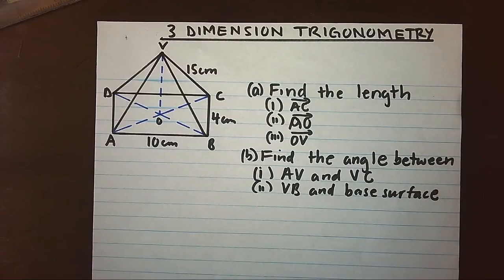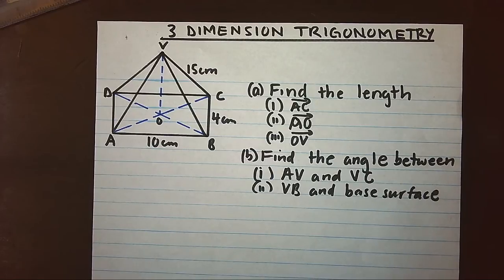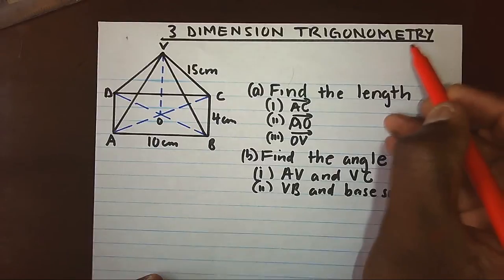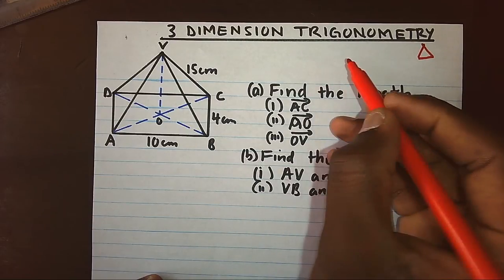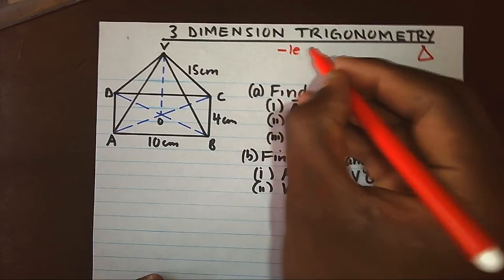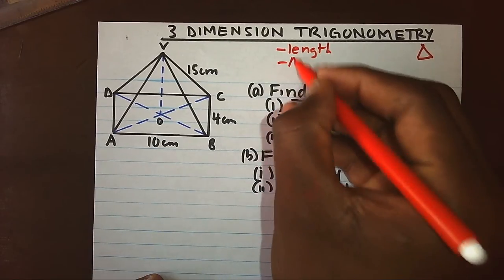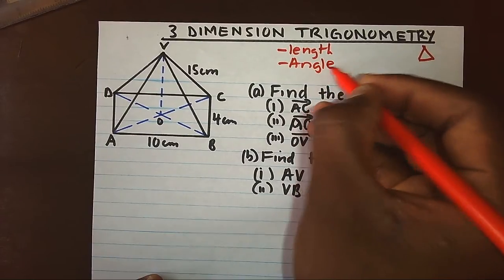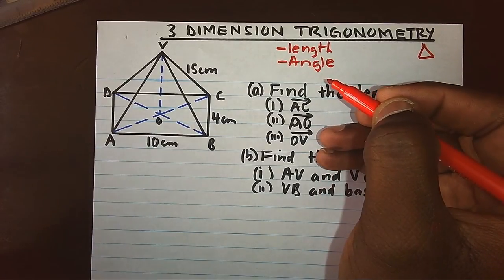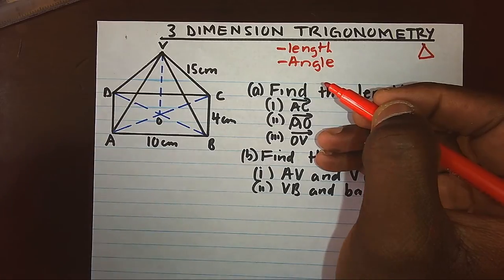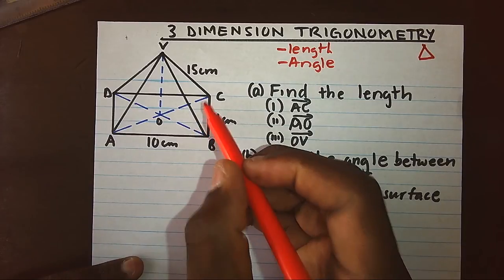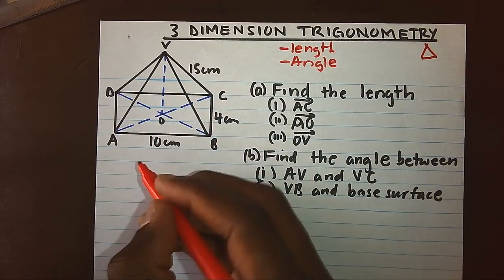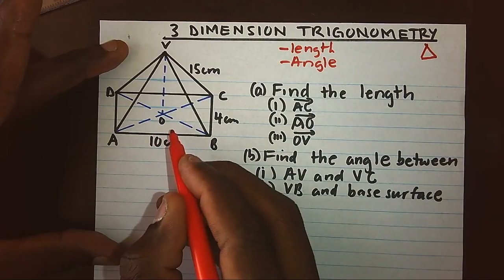Today we are looking at three-dimensional trigonometry. Every day we remember that the study of trigonometry is definitely the study of triangles. And what exactly do we do with the triangle? Either we find length or we find angle. Those are the two main activities when we are dealing with trigonometry. Here we have a three-dimensional shape. Our shape which we have today is actually a rectangular-based pyramid.